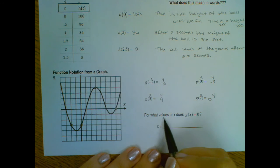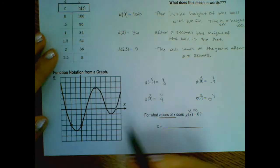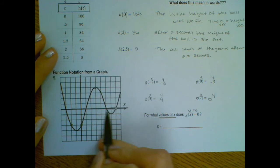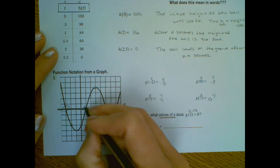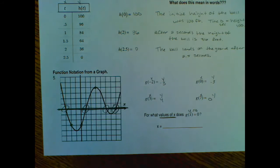And then our question on here says, for what values of x does y equal 0? So we're going to come over here and draw a line at y equals 0. And you can see that it crosses at four different sections.